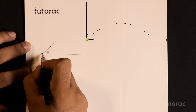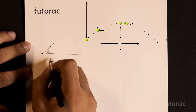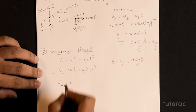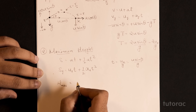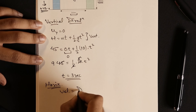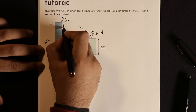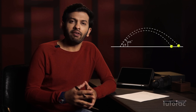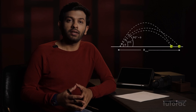We'll cover ground-to-ground projection, where we'll derive formulas for time of flight, horizontal range, maximum height, and the equation of trajectory. We'll also discuss the cases for maximum range and projection at complementary angles.